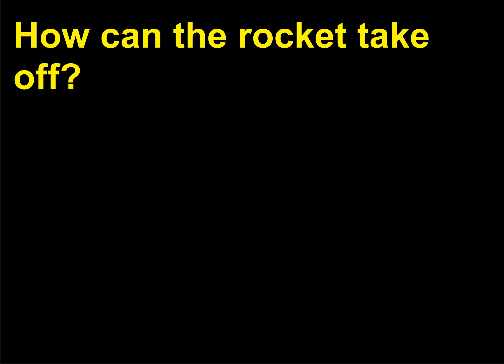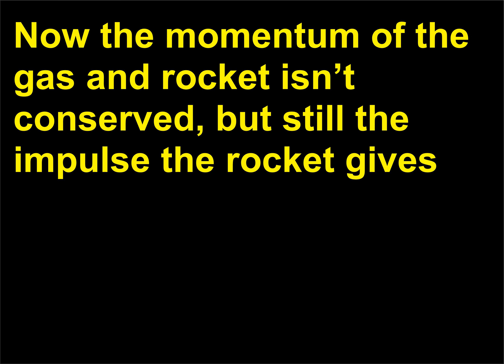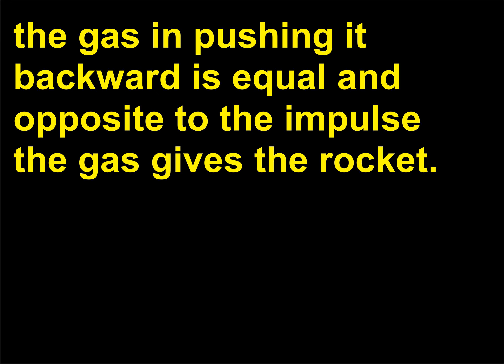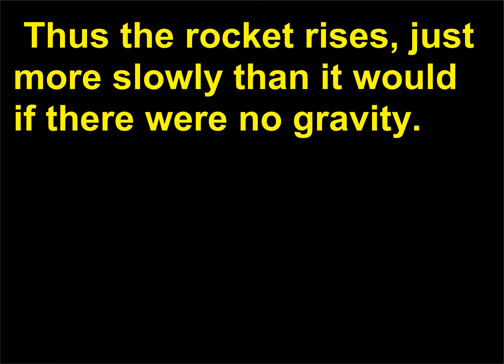How can the rocket take off? The momentum of the gas and rocket isn't conserved on the launch pad, but still the impulse the rocket gives the gas in pushing it backward is equal and opposite to the impulse the gas gives the rocket. The rocket rises, just more slowly than it would if there were no gravity.